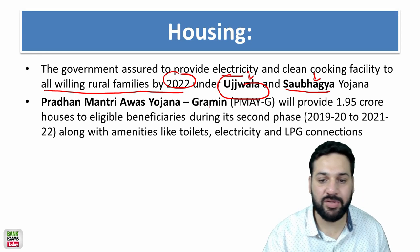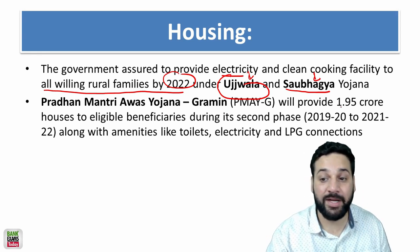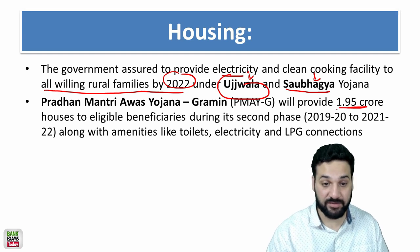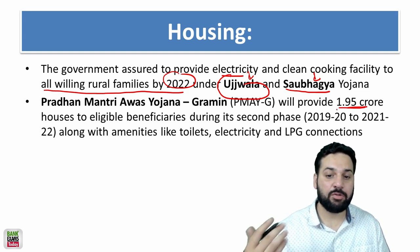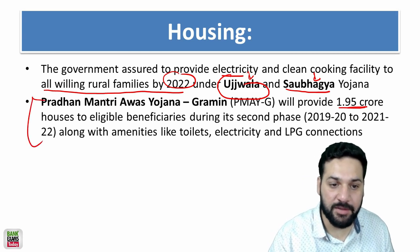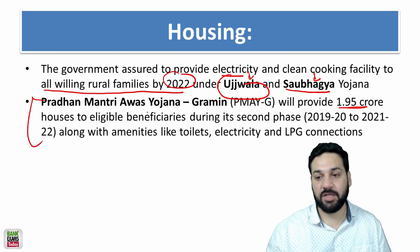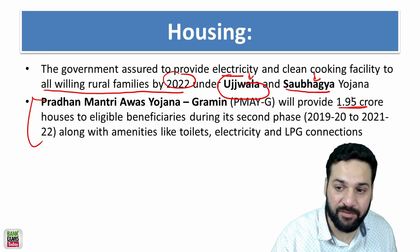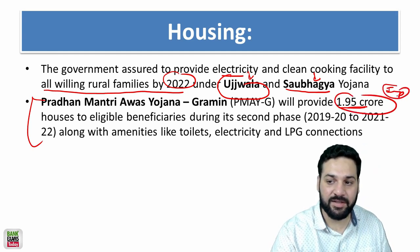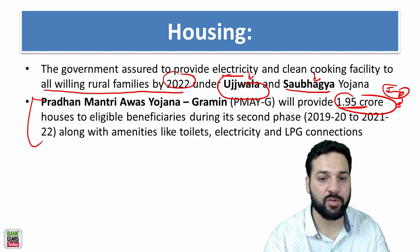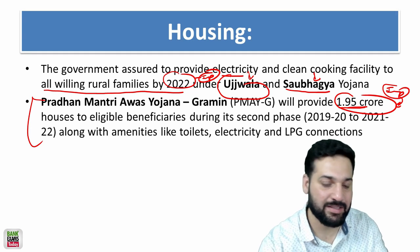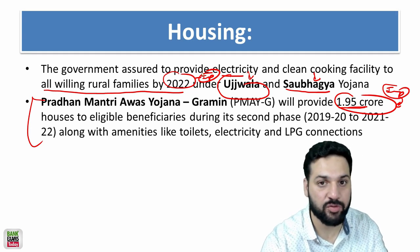Pradhan Mantri Awas Yojana Grameen will provide 1.95 crore houses to eligible beneficiaries in its second phase, with all amenities like toilet, electricity, and LPG connections. This is an important point — the target is 1.95 crore houses by 2022, so the 2022 target is also important.